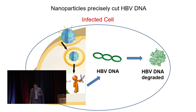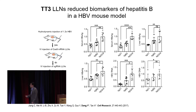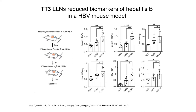In this study, we tested various formulation ratios and were able to load over 99% of the guide RNA and Cas9 mRNA into the TT3 nanoparticles. With our collaborators, we established an HBV mouse model by hydrodynamic injection of plasmid encoding HBV, then injected nanoparticles with Cas9 mRNA and guide RNA. For guide RNA SG21, we observed significant reduction in all HBV biomarkers, including serum S antigen, E antigen, liver S antigen, E antigen, HBV RNA, and HBV DNA.